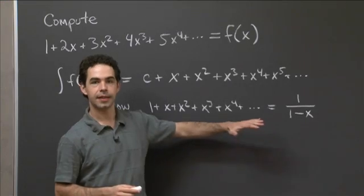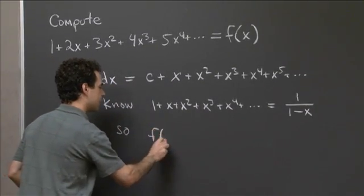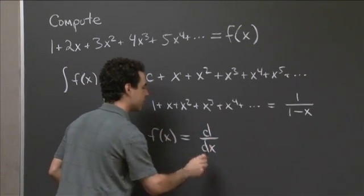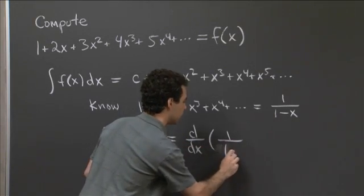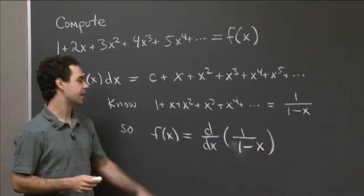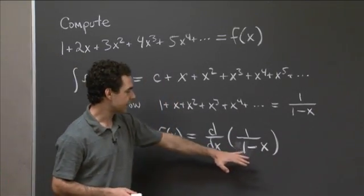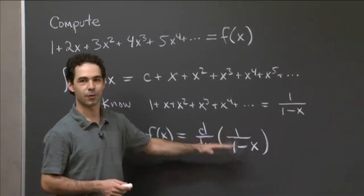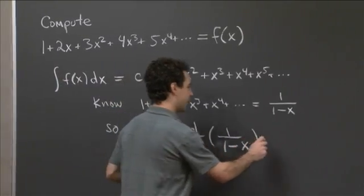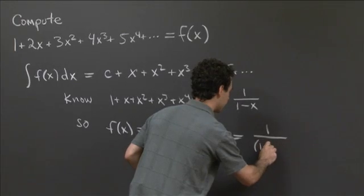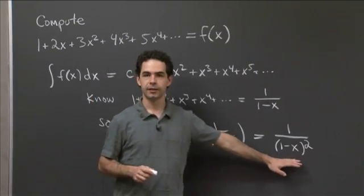So since we know that this is the case, that means that our power series, f of x, is just the derivative of this. That's what we just showed here. So f of x is equal to d over dx of 1 over 1 minus x. And notice that if I'd chosen a different choice of constant here, it would be killed off by this differentiation. So it really was irrelevant. So d over dx of 1 over 1 minus x, and this is an easy derivative to compute. This is 1 minus x to the minus 1. So you do a little chain rule thing, and I think what you get out is that this is 1 over 1 minus x squared.